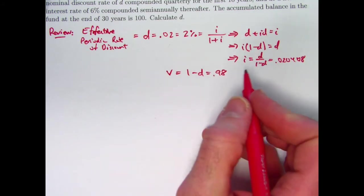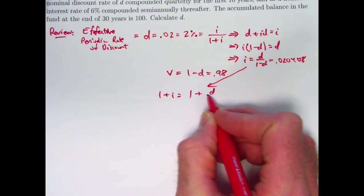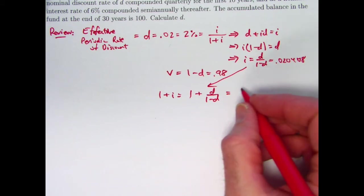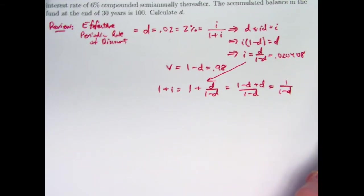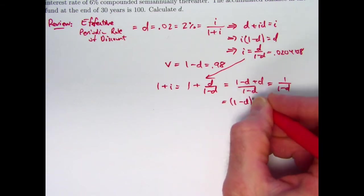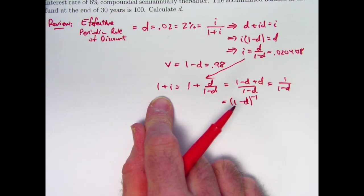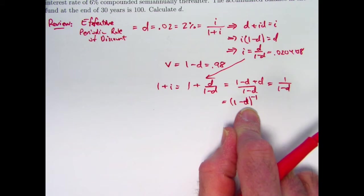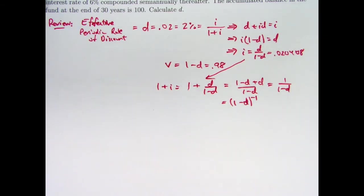It's also helpful to be able to solve these equations for 1 plus I. For example, if I take this equation and add 1 to both sides and simplify by getting a common denominator of 1 minus D, I get 1 over 1 minus D. 1 plus I is the same as 1 over 1 minus D, which is the same as 1 minus D to the negative 1 power. So 1 plus I is the effective periodic growth factor. So is 1 minus D to the negative 1. That's good to realize, and that would be helpful for solving this problem. 1 minus D to the negative 1 is the same as 1 plus I. It's the effective periodic growth factor. It's what you multiply an amount by to get the value of that amount in the next year. All right, so that's the gist of the review here.